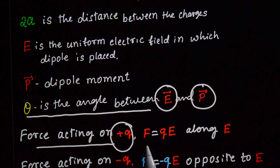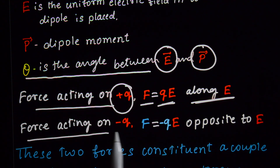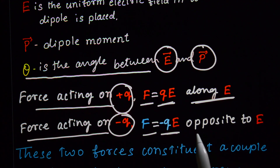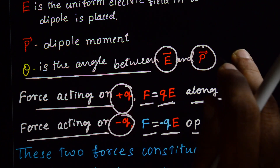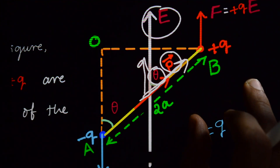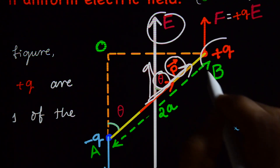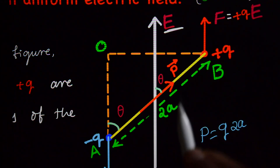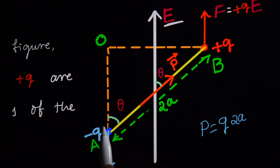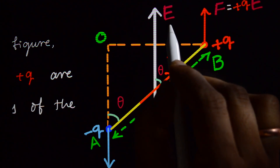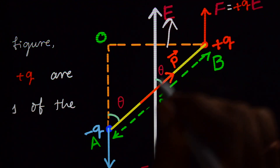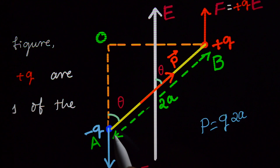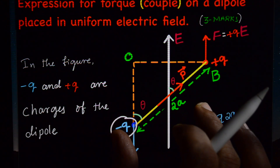Force acting on plus Q: F equals Q into E, along the direction of the electric field — that is, in the upward direction. Force acting on minus Q: F equals minus Q into E, opposite to the direction of the electric field — that is, in the downward direction. So the minus Q charge experiences a force opposite to the electric field direction.